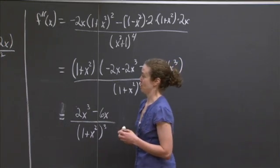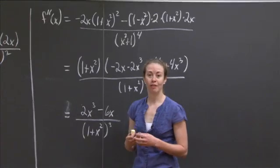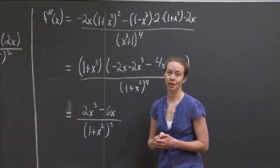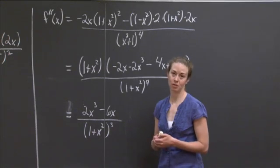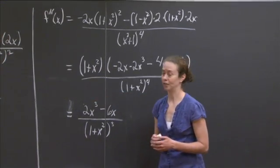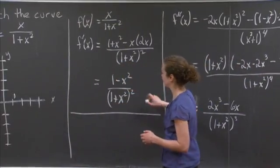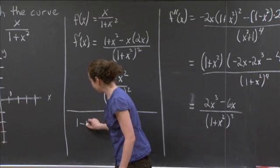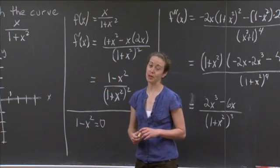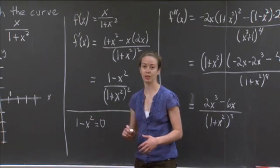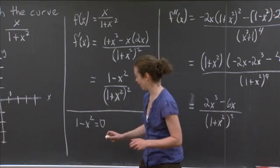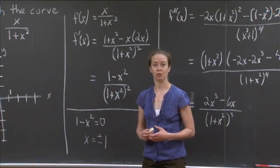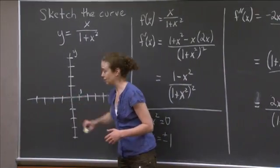So let's recall what we know: when the derivative is equal to 0, we have a maximum or minimum for the function. Let's find where the first derivative is 0. The first derivative is only equal to 0 when the numerator is equal to 0, so let's solve 1 minus x squared equals 0. We see right away that x is equal to plus or minus 1. So those are maximum values or minimum values for the function — those are our critical points.